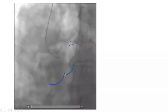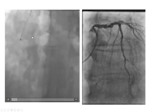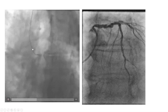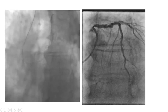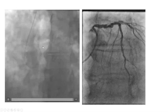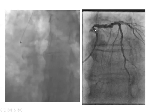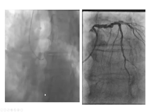AL3 wasn't available that day, so I used Ikari left 4.5 — you can also use CLS or EBU 4.5. I made it jump into the left cusp, then pushed to catch the left coronary, then pulled to make it more coaxial. Interestingly, that patient had a tight ostial LAD. We were a little non-selective so we didn't get ventricular rise on tracing, but it was a tight ostial LAD.